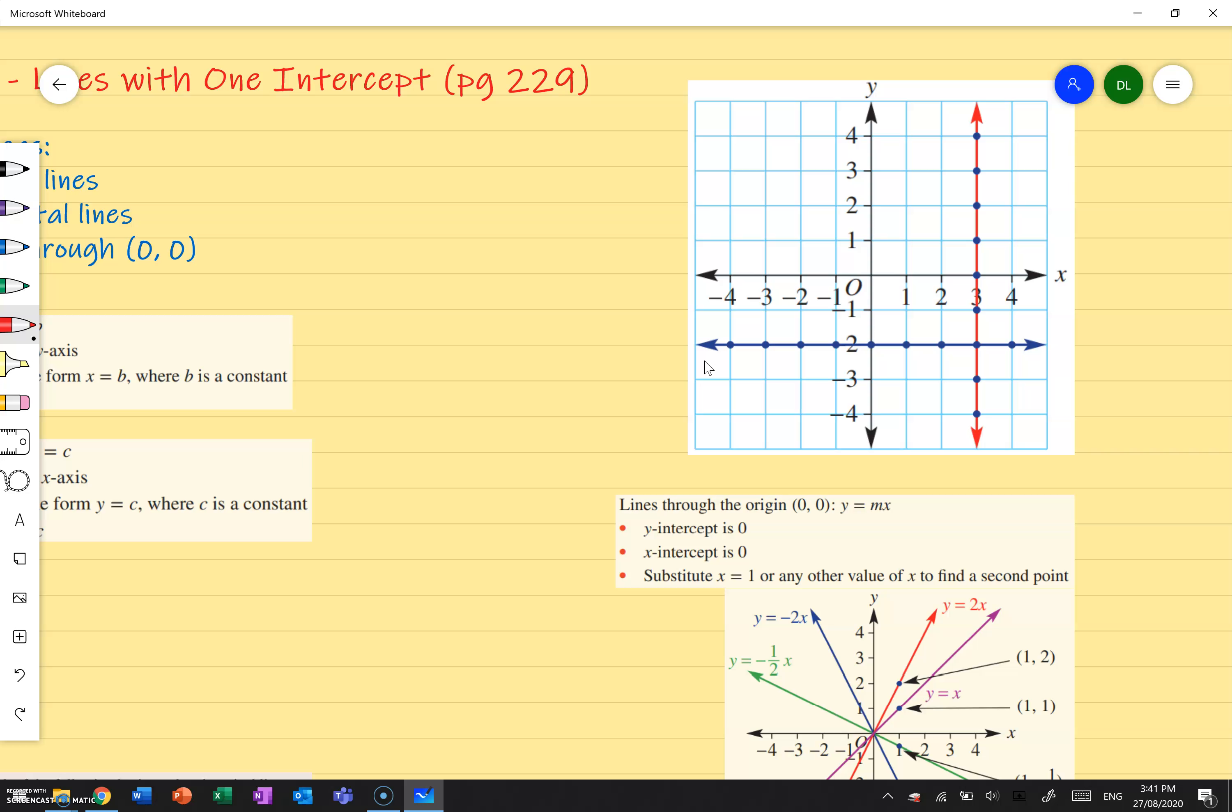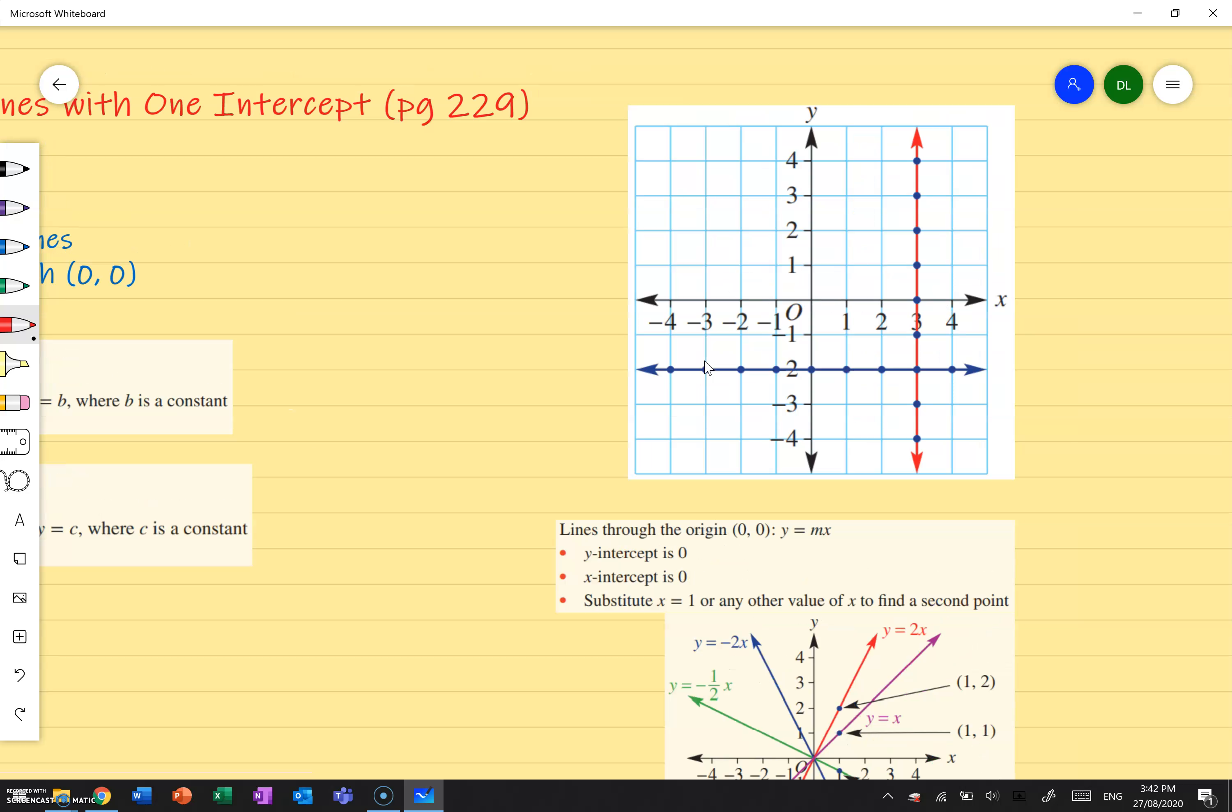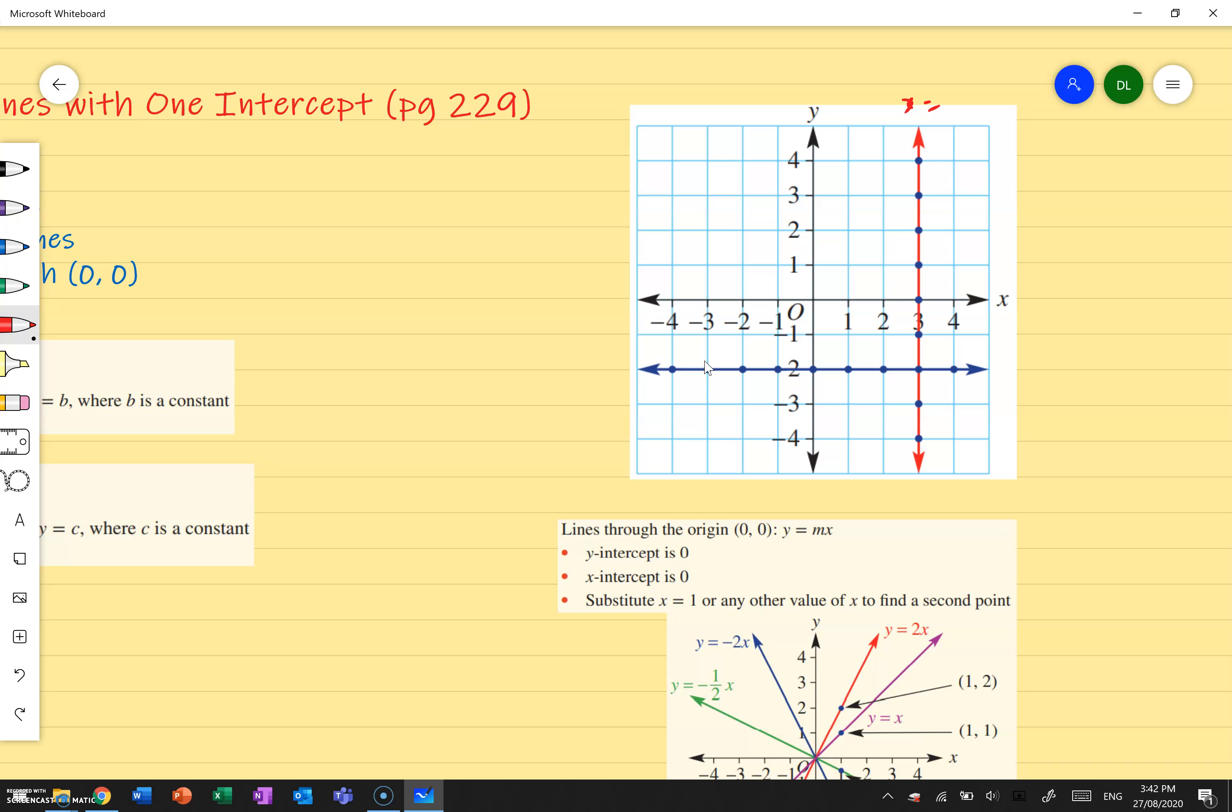So if we look at the red line over here, if we were to continue this line we would notice that it goes on forever without touching the y-axis, and the reason being is because it's parallel to the y-axis and it's in the form of x equals b. In this situation I know that x equals 3 because no matter what value I put in for y, the value of x is always going to be 3.